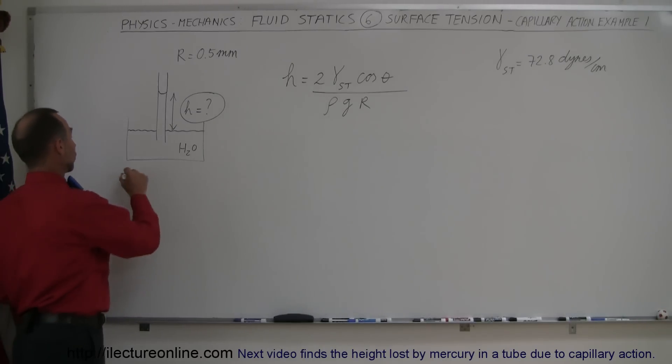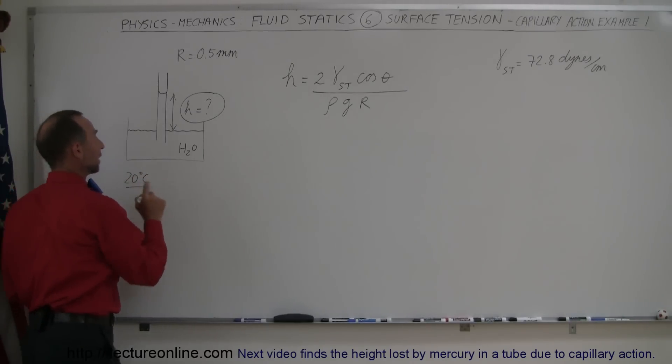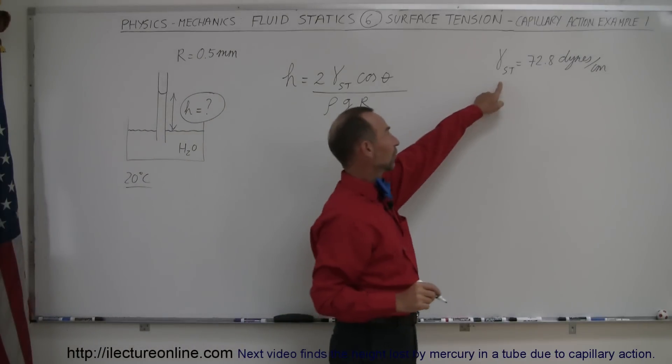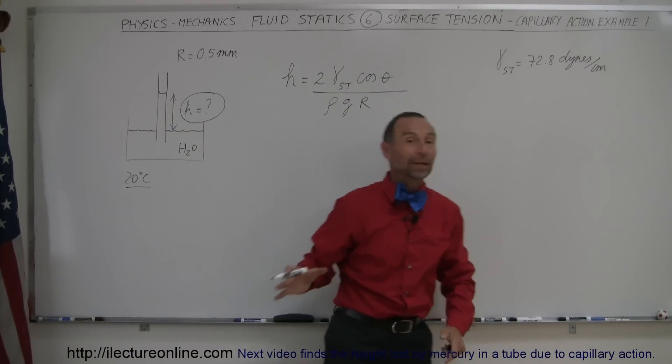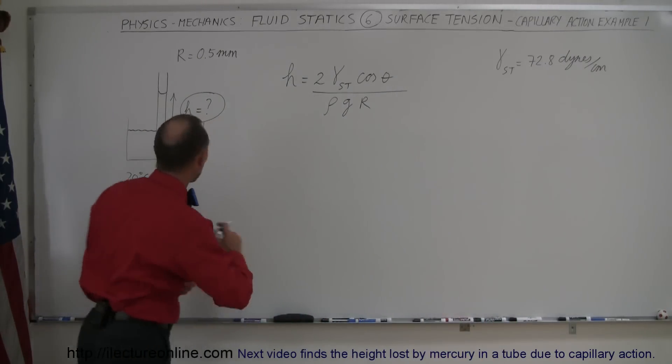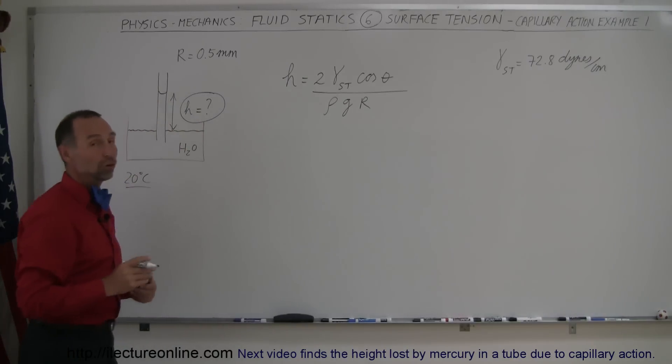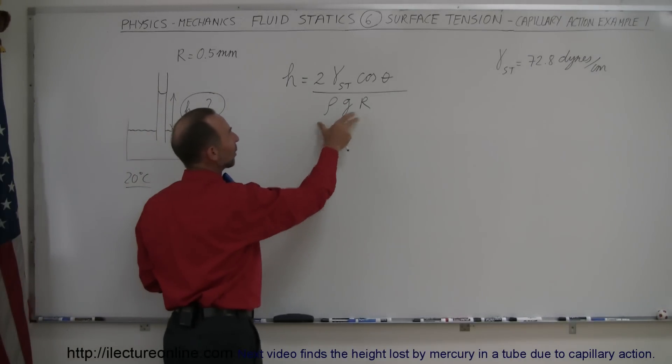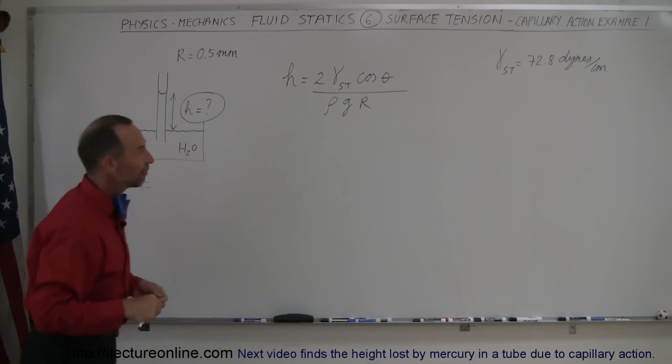If the temperature is 20 degrees centigrade in such a way that the coefficient of surface tension is 72.8 dynes per centimeter, how high will the water rise in the tube? And just for our convenience, this is the equation that we derived in the previous video.